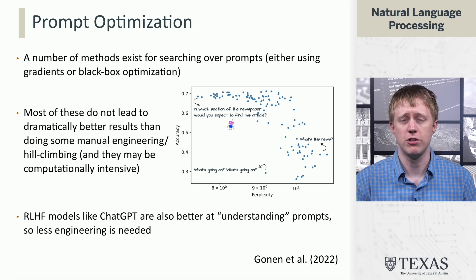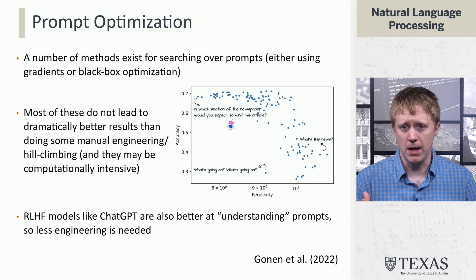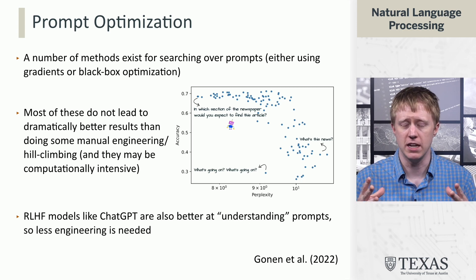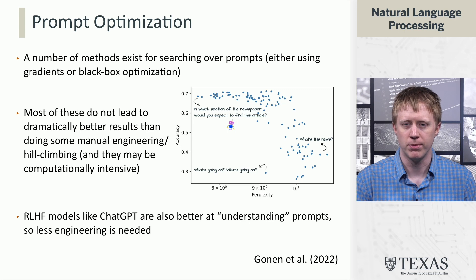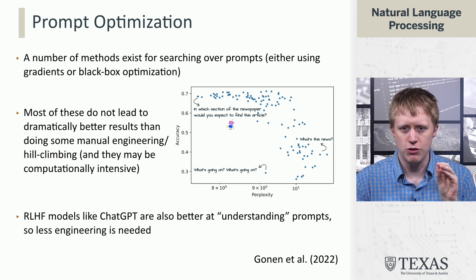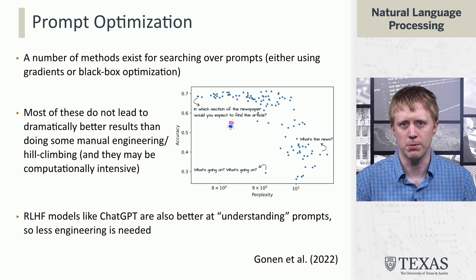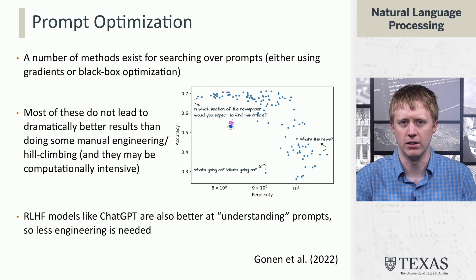There have been a number of techniques proposed for prompt optimization, either via gradients, black box optimization, or reinforcement learning. At least at this point, many of these do not dramatically improve results over just doing some manual engineering, and they may be really expensive to run. Often, if you just try four or five different prompts, you'll find something that works pretty well. The latest models like ChatGPT are specifically trained to do better when given prompts compared to basic language models, so they're much more accommodating of ill-posed prompts. The role of prompt engineering in driving performance improvements going forward is a little unclear.